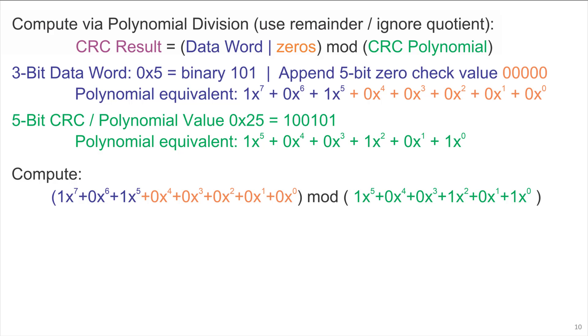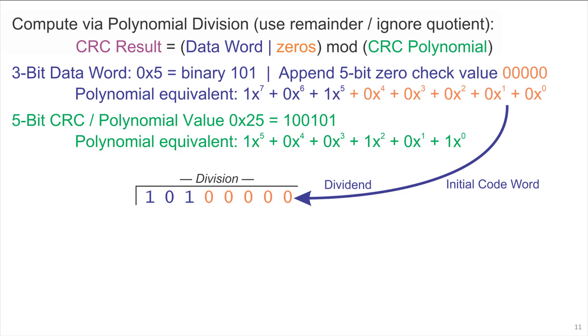We do this computation using a somewhat familiar long division algorithm except with all the digits being binary. The division takes the dividend 1x^7 + 1x^5 with the other terms being 0, and a divisor 1x^5 + x^2 + 1 with the other coefficients being 0. And from there, we compute a long division.